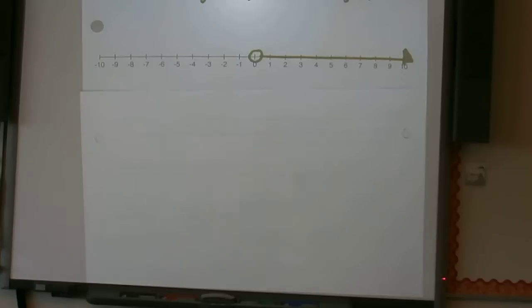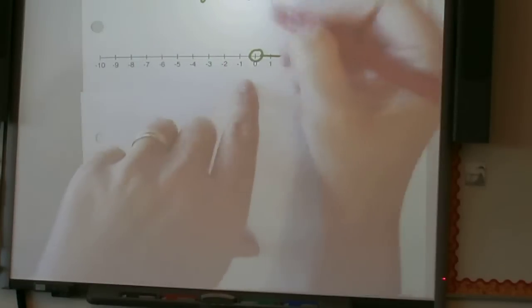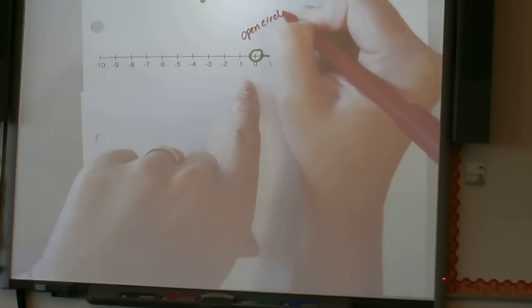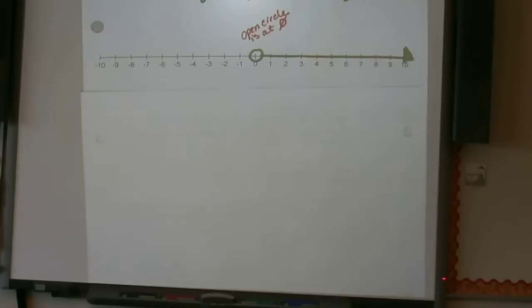So for this first one, the open circle is at zero. So that means whatever our inequality is has to deal with something with zero.